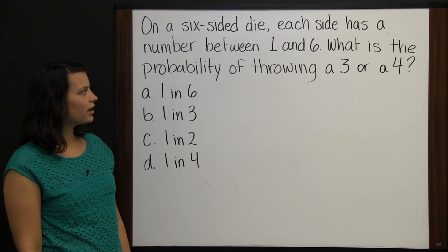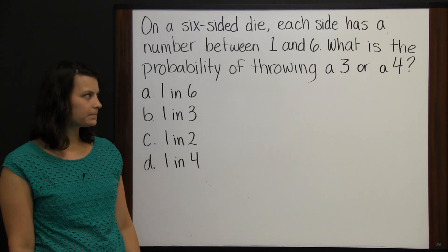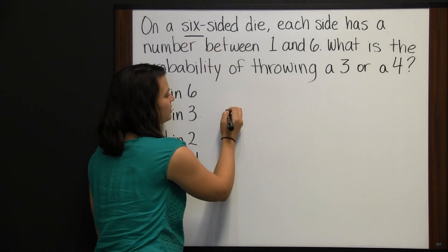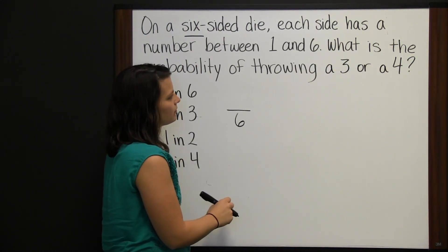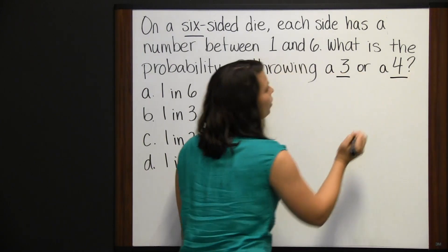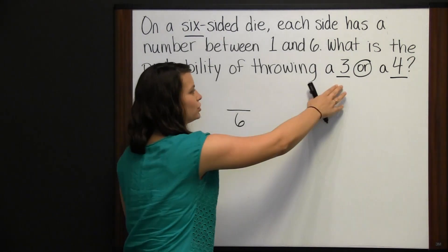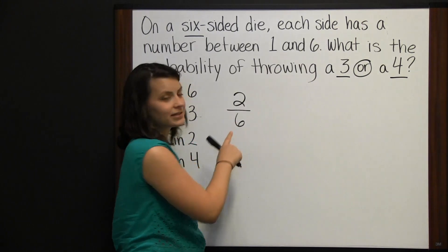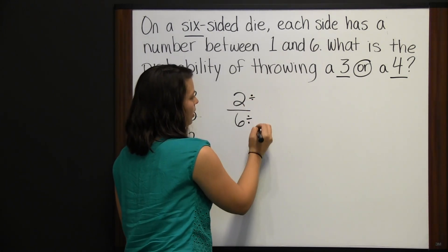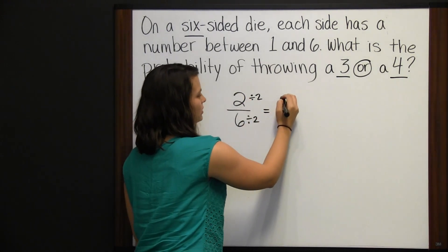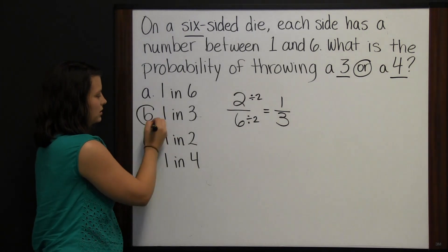On a six-sided die, each side has a number between one and six. What is the probability of throwing a three or a four? The die has six sides, so our denominator is 6. The key word is 'or' — if it lands on either a three or a four, we're good. That's two favorable outcomes out of six. Simplifying by dividing by 2 gives us 1 out of 3, a one-in-three chance.